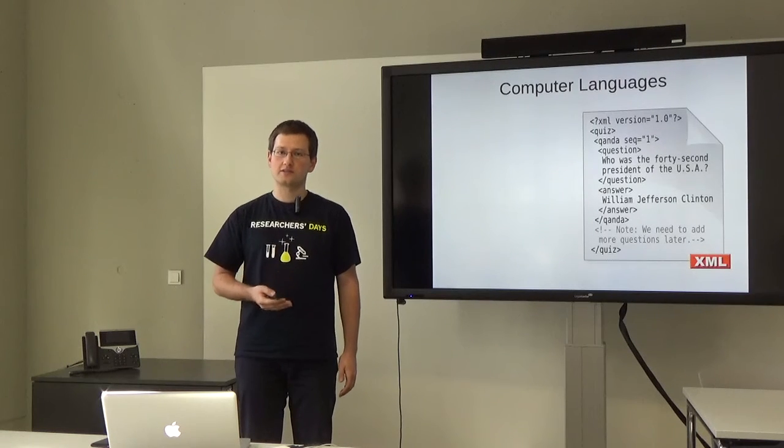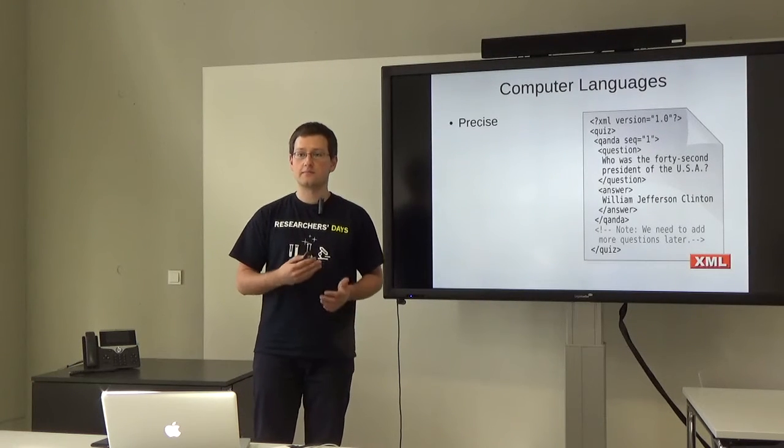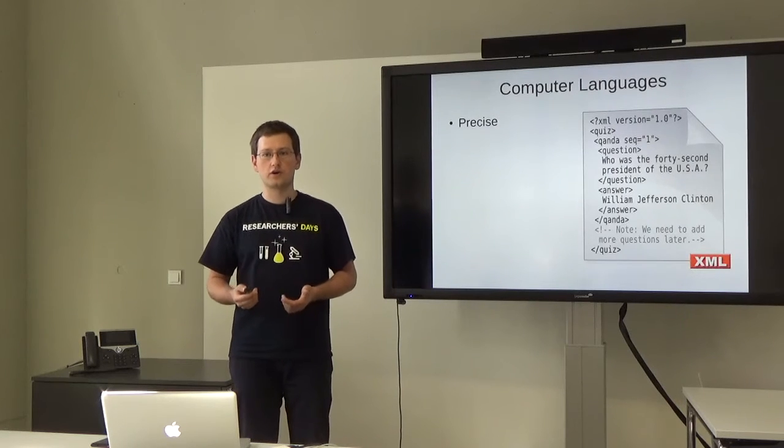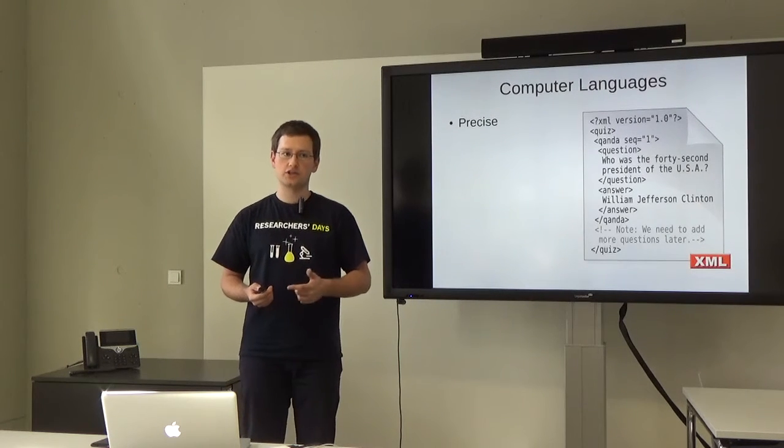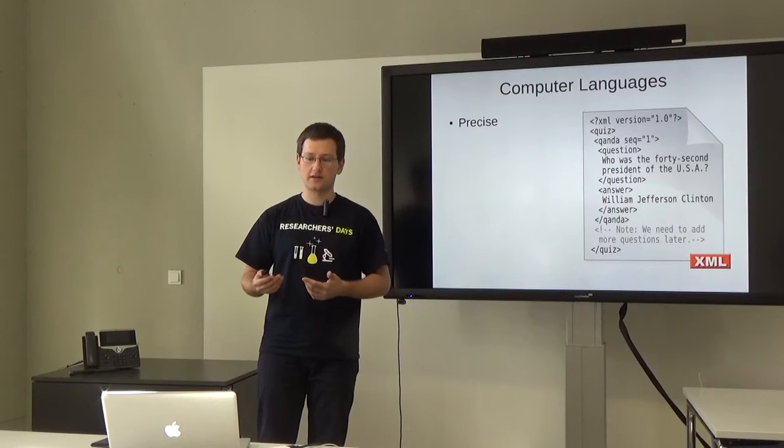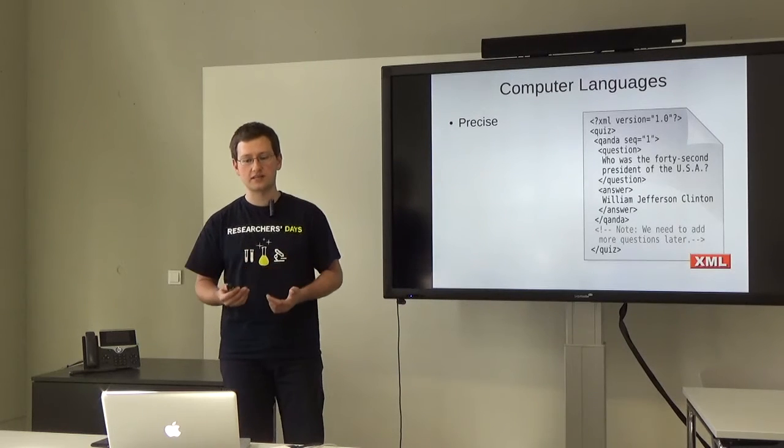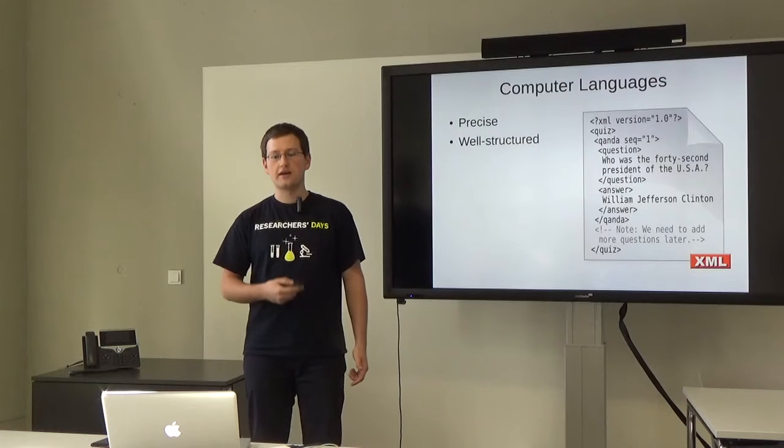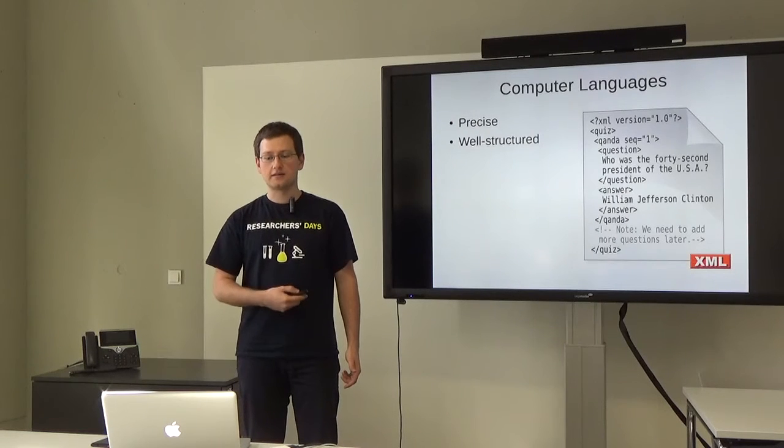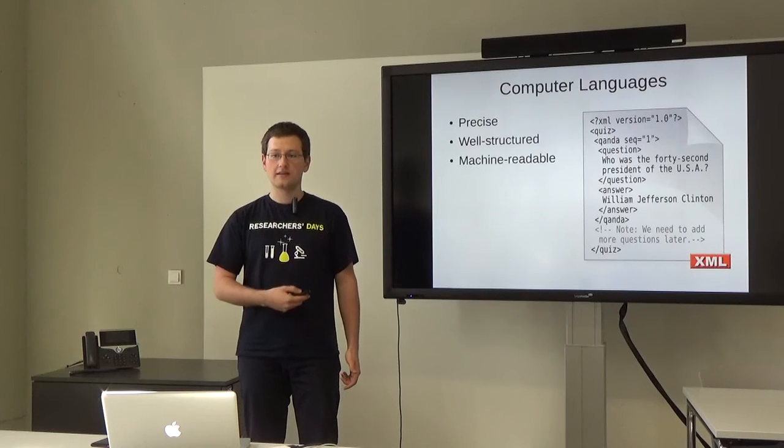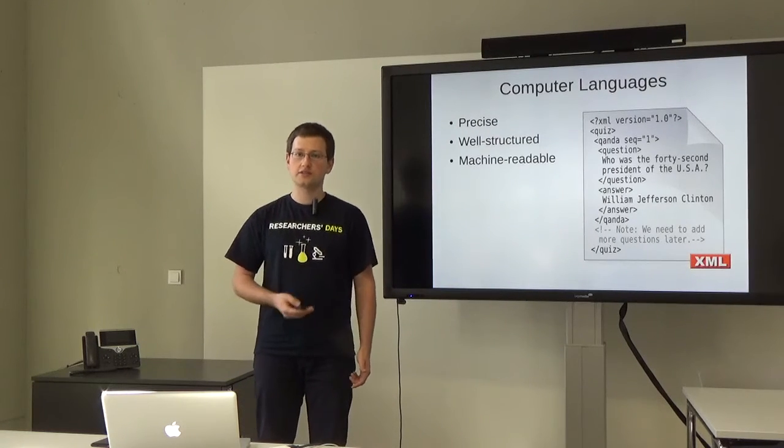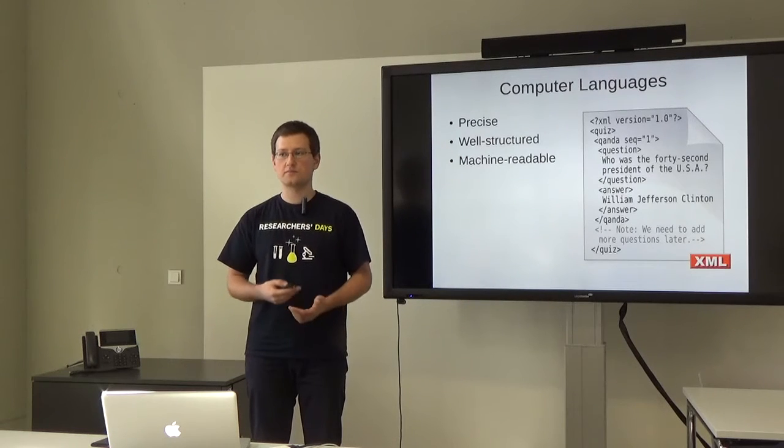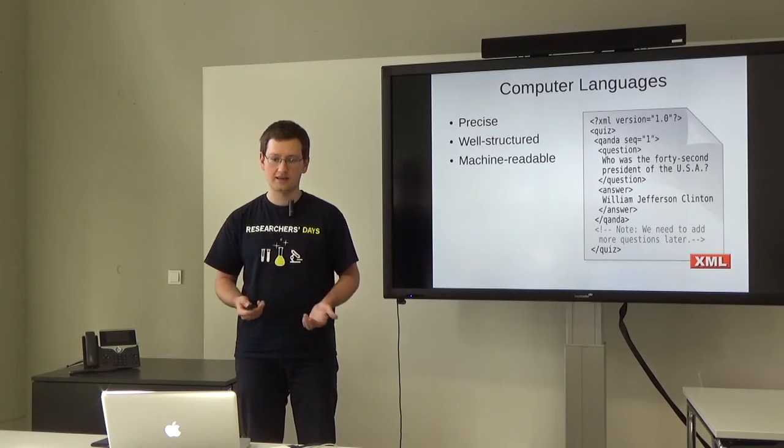What are the properties of computer languages? They are precise. Contrary to natural language, where every word has some shades of meaning, which is dependent on the speaker and the listener, computer languages are precise. Every word has a strict definition, a clear semantics. They are well structured and as a consequence, they are machine readable. That is, computers can read this text and make sense of it, build some models, do some computations and help us understand what's in there.